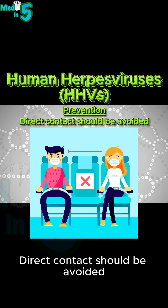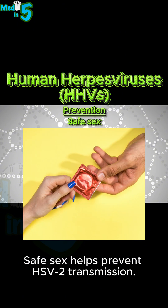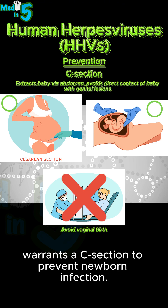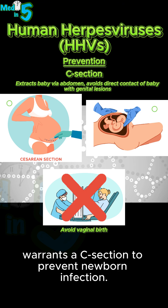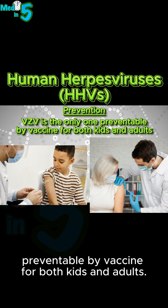Direct contact should be avoided during active outbreaks. Safe sex helps prevent HSV-2 transmission. Maternal genital herpes during labor warrants a C-section to prevent newborn infection. VZV is the only one in this group preventable by vaccine, for both kids and adults.